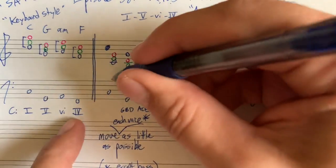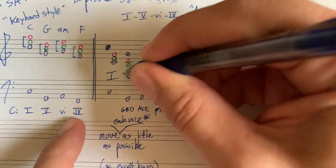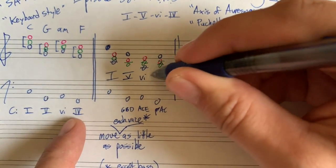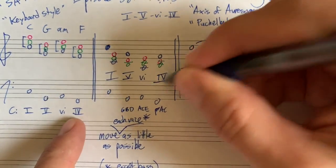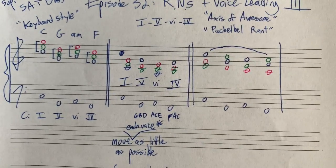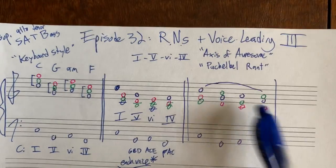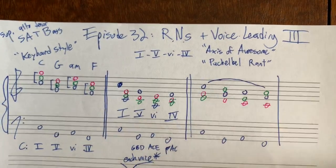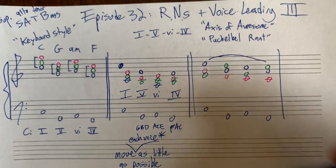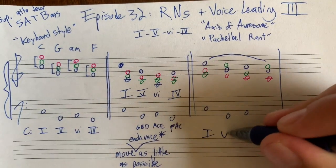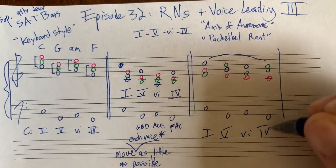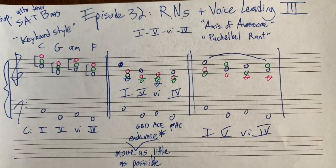Running out of time — these are all ways to play one, five, six, four, and they sound pretty dramatically different. The importance of voicing: learn it, know it. It's a one, a five, a six, a four. Goodbye.